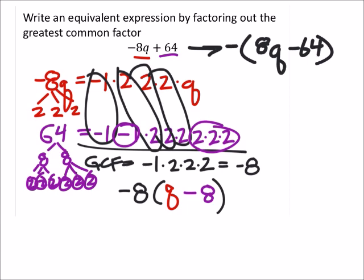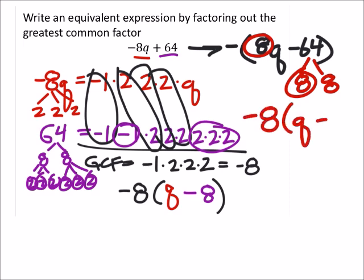Maybe I had those backwards, my bad. This one has an 8q, and this one's 8 and 8. So I mean, there's an 8 in common. So negative 8, and then we've got a q minus 8, which is what we got before.